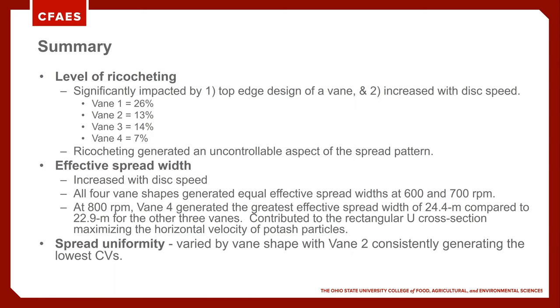For spread uniformity, it varied by all the veins, but notably vein two consistently generated low CVs. The CVs were consistent whether it was at 600, 700, or 800 RPM for vein two — they were all equivalent.